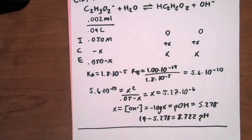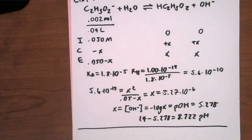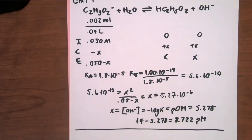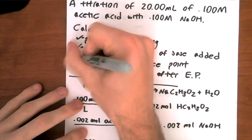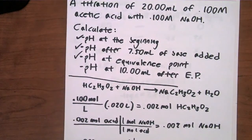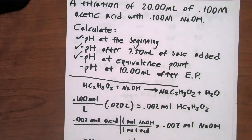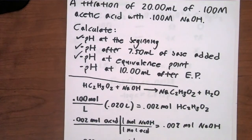14 − pOH = 14 − 5.278 = pH of 8.722. This makes sense — after adding 7.5 mL we were at pH 4.52, now at equivalence point after 20 mL we're at 8.722. The solution has become basic, which is expected. Now step four: pH at 10 milliliters after the equivalence point — meaning 10 mL of excess NaOH.